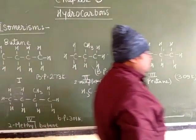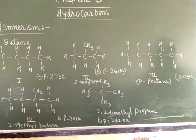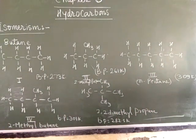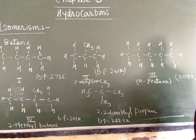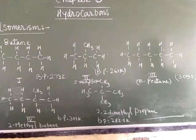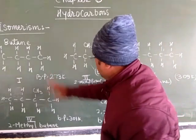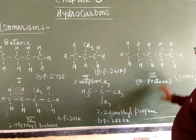2,2-dimethyl propane is also known as neopentane. So all compounds show chain isomers. This is part of structural isomers. If you see all the structures, structures one and three are continuous chain isomers.